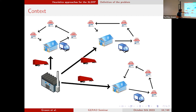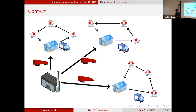So we have the production, the lot sizing decisions, the transportation decisions, and the routing decisions to make at once. This is the idea of the problem — to make all those decisions simultaneously instead of having some sequential decisions where we produce first and then see how much we send, or vice versa.